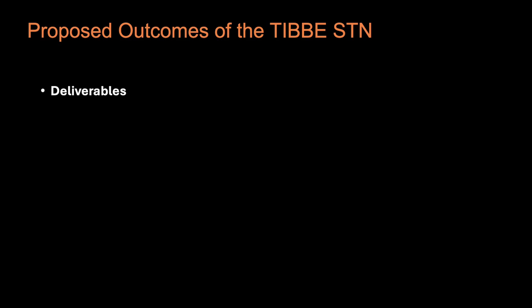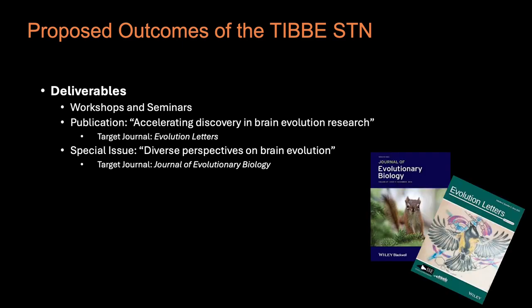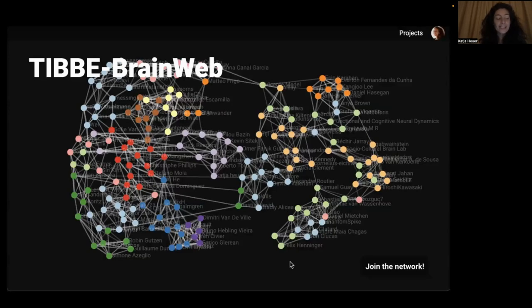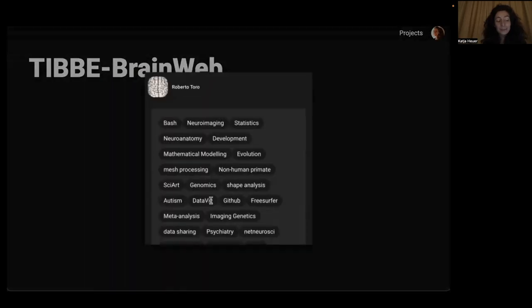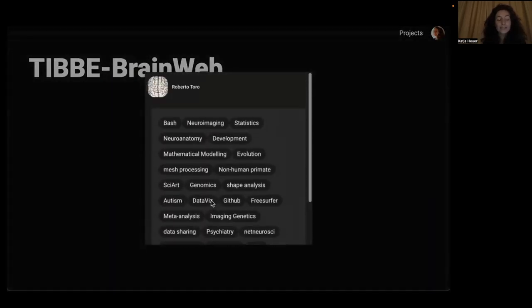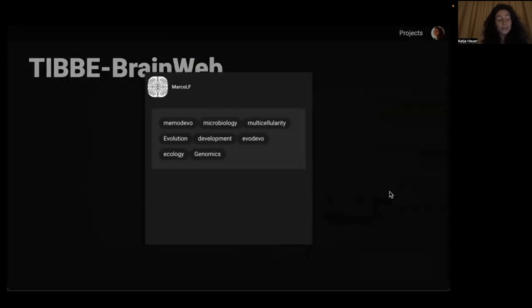Our planned deliverables include workshops and seminars, which we hope to launch by the end of the year, a team publication, and a special issue in which we will take a broad evolutionary perspective on brain evolution research, and a web platform. We created the TIBI Brainweb — a permanent space for the community to find collaborators and projects and start working together. This community graph is built by connecting people based on the skills and interests they list, allowing you to see who is close to you in the graph and could be a potential collaborator with similar interests and expertise, or alternatively who is far in the graph and could bring additional skills to your projects.